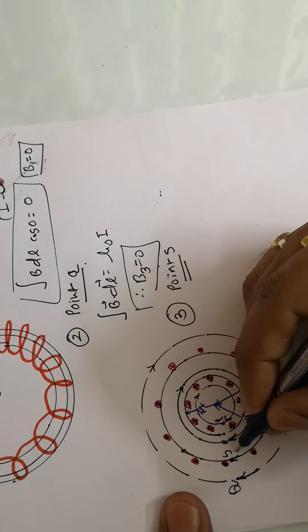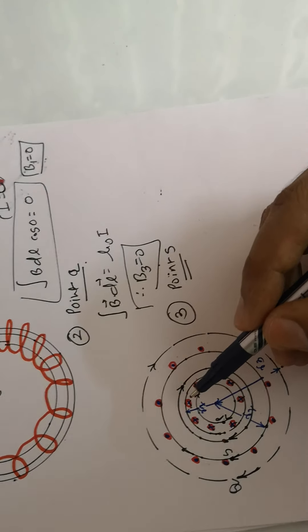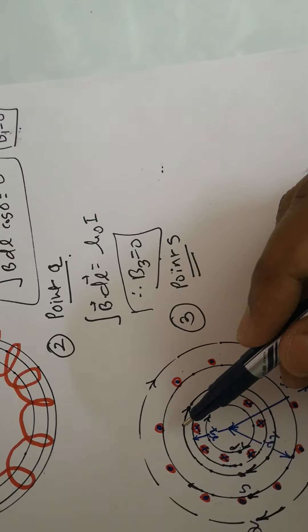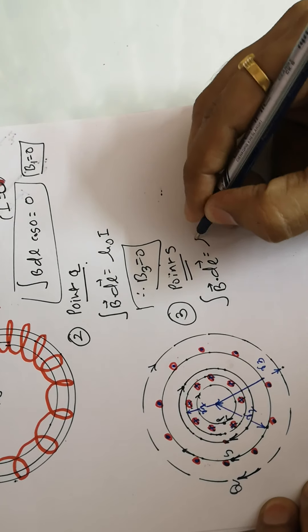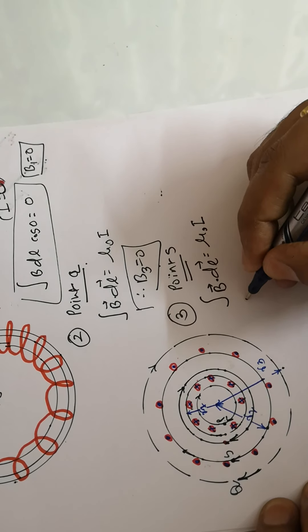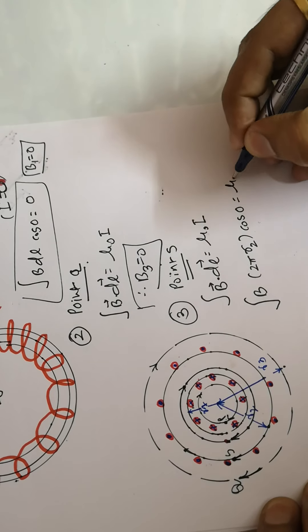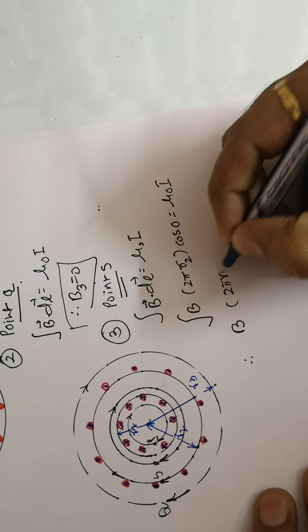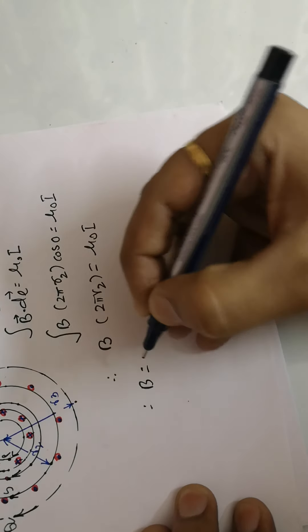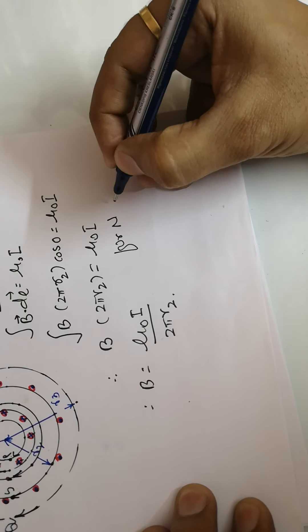Now for point S, which is on the toroid where current is actually passing — these are the dot and cross points where magnetic field lines come out and go in. Applying Ampere's law at point S: the integration of B·dl = μ₀I. Integrating dl gives 2πr₂, and with angle cos0°, we get B·2πr₂ = μ₀I. Therefore B = μ₀I / 2πr₂.